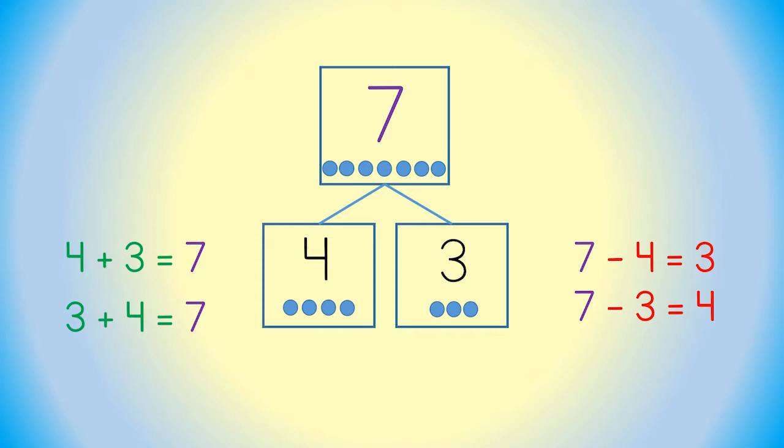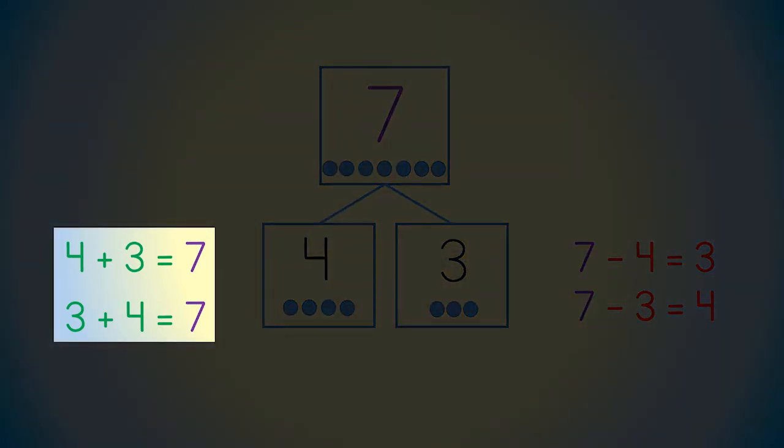Remember the commutative property? The commutative property of addition tells you that you can switch your addends back and forth. Look at the two addition sentences. 4 plus 3 is the same as 3 plus 4. That's the commutative property of addition, saying that 4 and 3 can be switched back and forth because they will still equal 7.